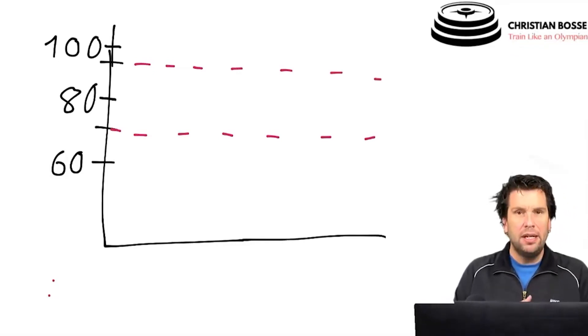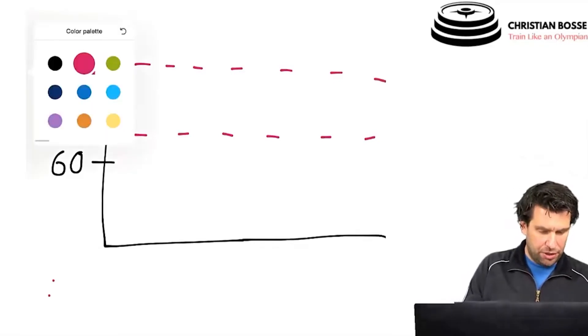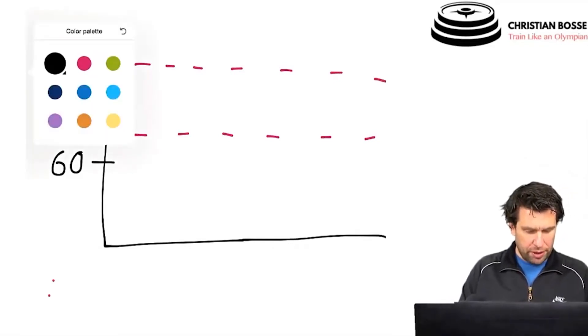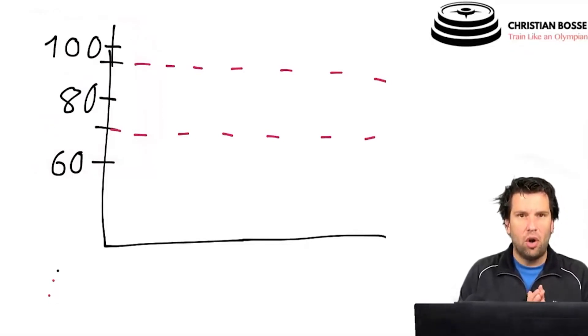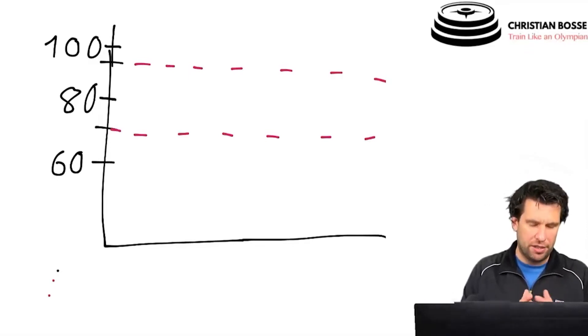So let's make it easy. Let's say we design intervals working up to 80%, hold 80% for a minute, and then we have two minutes of recovery. So that could be one example.